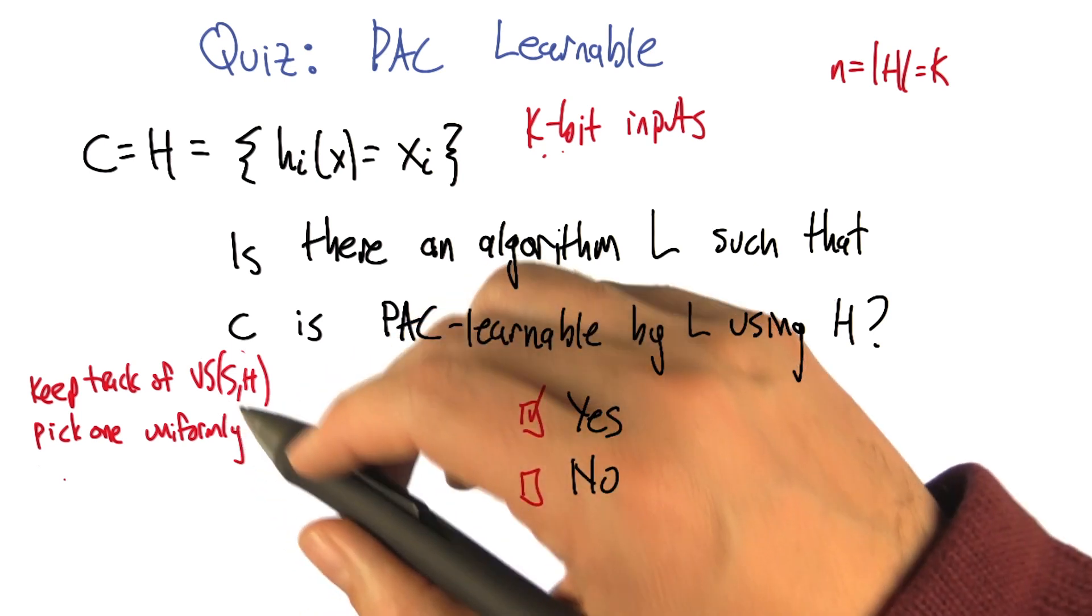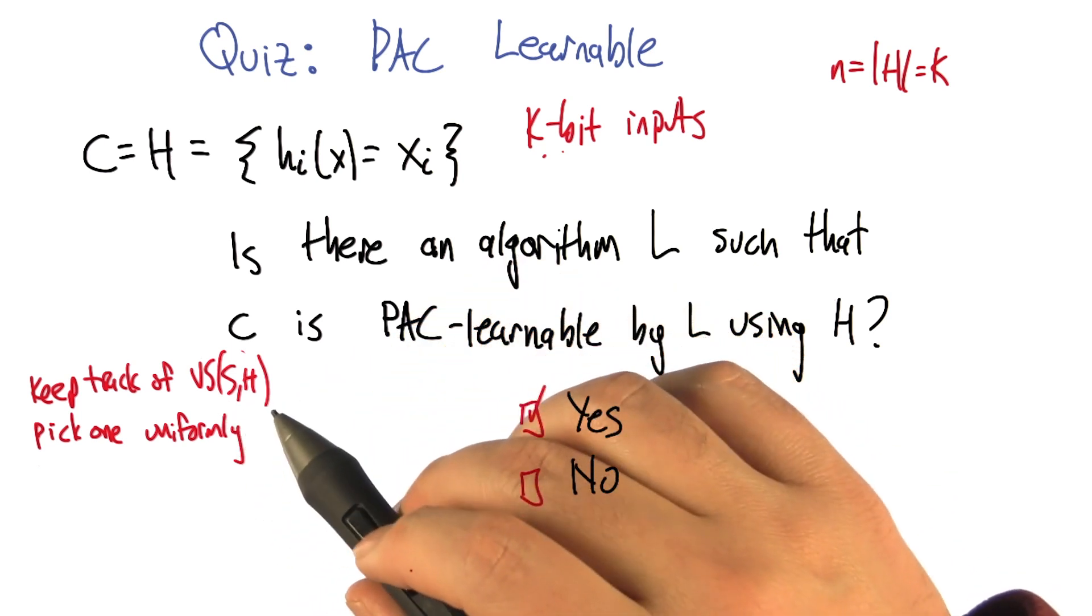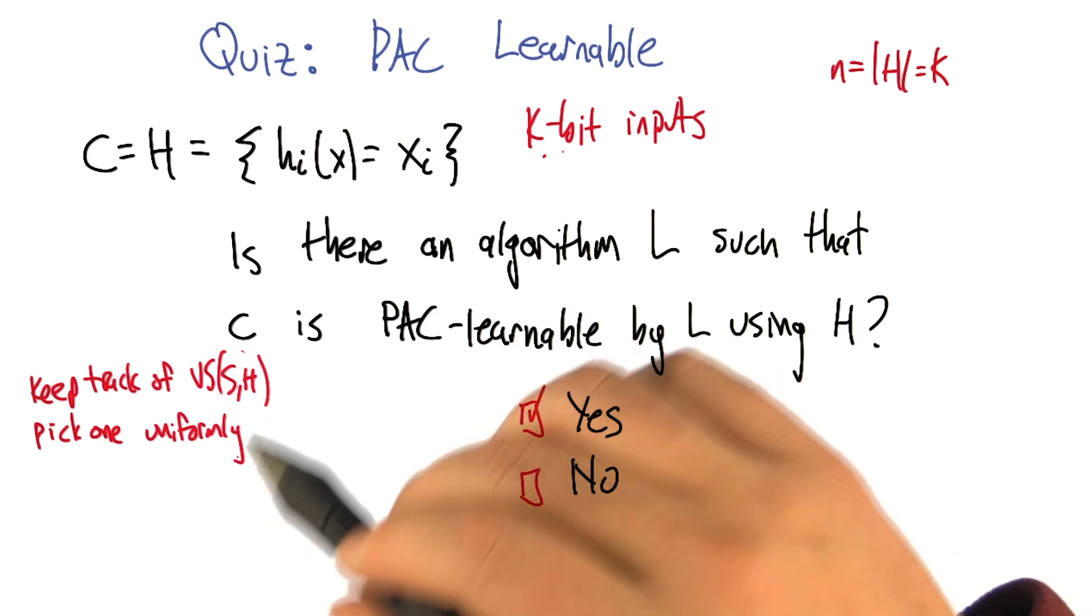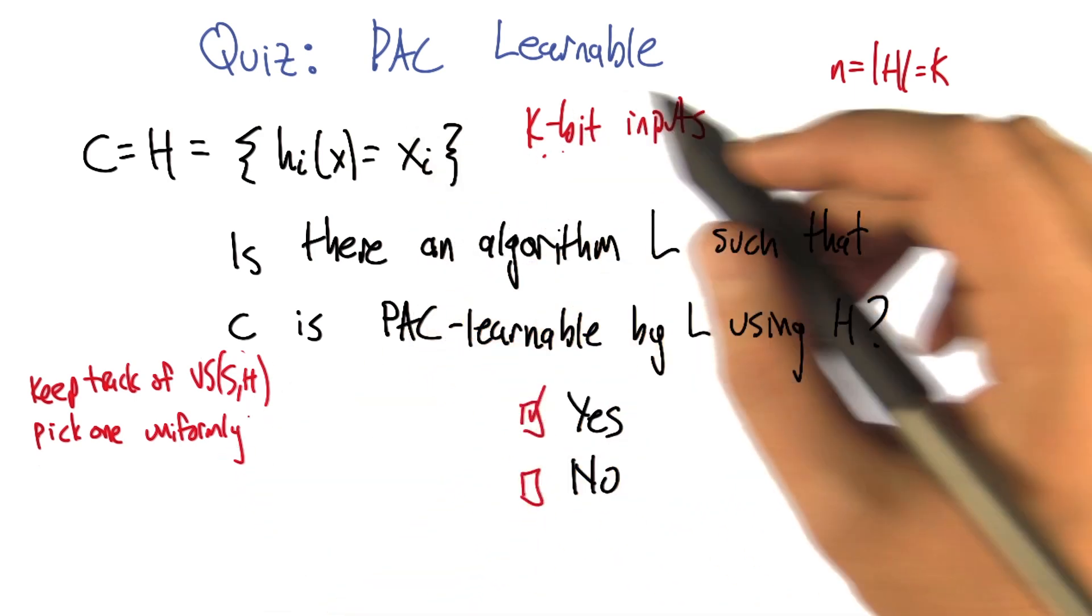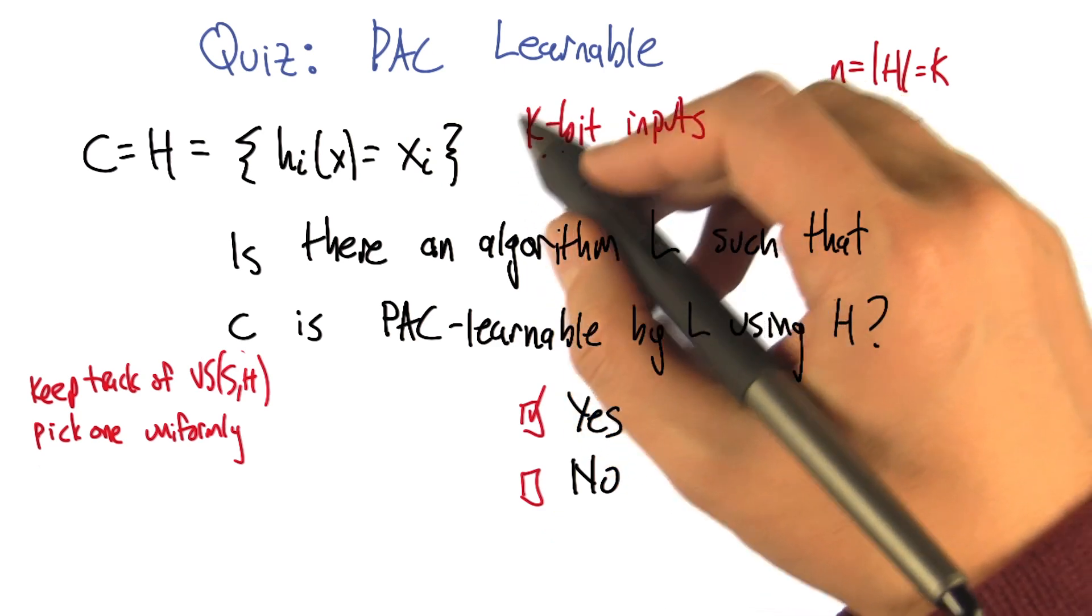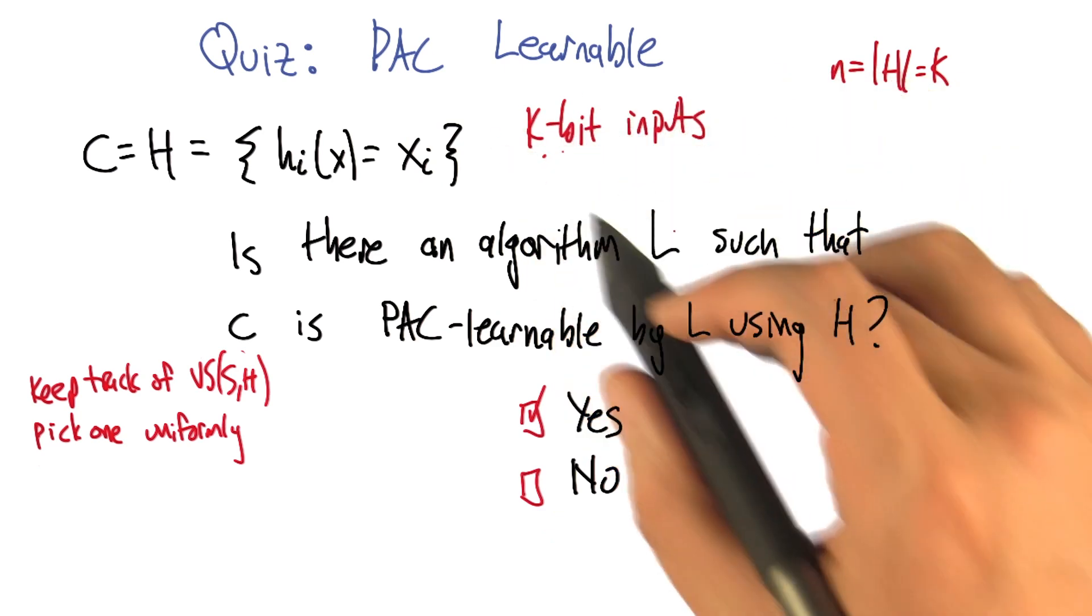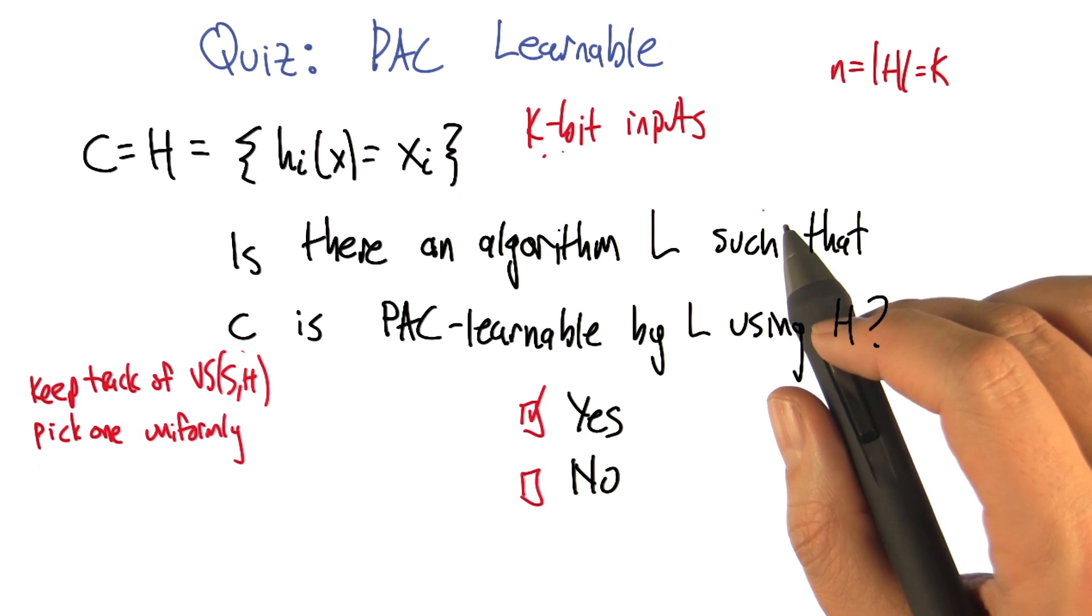So I agree with you, and this is a good algorithm, but what we lack at the moment is an argument as to why the number of samples that it needs isn't exponential, right? Because there's an exponentially large, you know, 2 to the K different possible inputs. If we had to see all of them to be able to guess right, that would be too many.